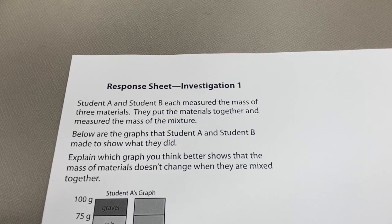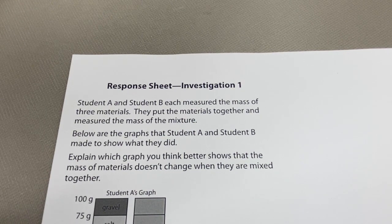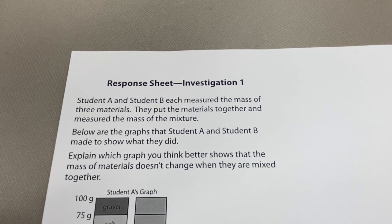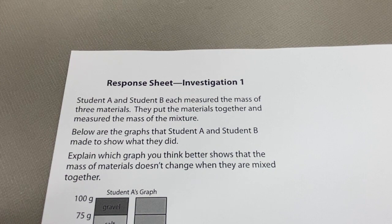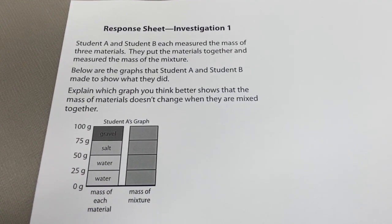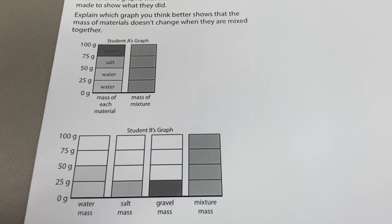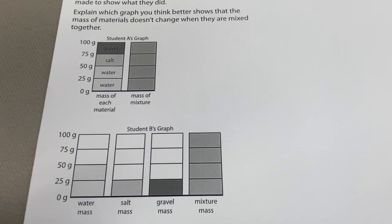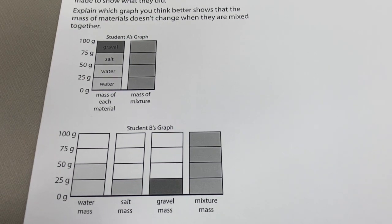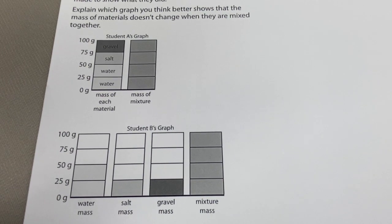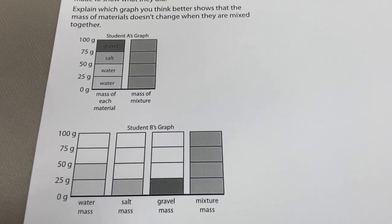So let's look at the response sheet for this investigation. Student A and Student B each measured the mass of three materials, put the materials together, and measured the mass of the mixture. Below are the graphs that Student A and Student B made. Explain which graph you think better shows that the mass of materials doesn't change when they are mixed together. For this response, there really is no right or wrong answer — it's all about your explanation and why you picked the graph you picked.